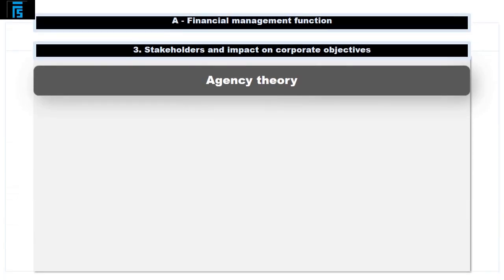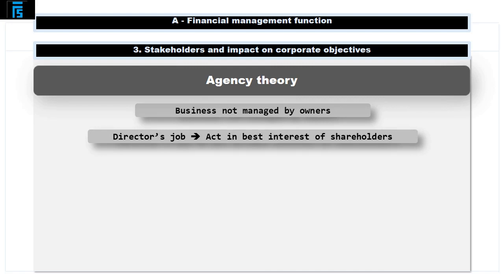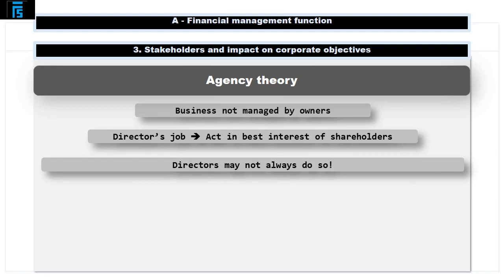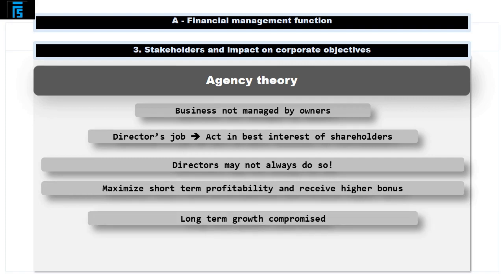Agency theory. The owners of the organisation are the shareholders, but often they don't manage their businesses — this is done by the directors. The directors' job is to act in the best interests of the shareholders. However, they may not always do this and could act in their own best interests. For example, deciding to maximise short-term profitability so they will receive higher bonuses at the expense of long-term growth for the organisation and higher share prices in the long run for shareholders.